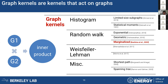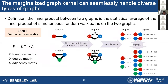We can also apply kernels to graphs. The kernel should take in two graphs, and the output defines an inner product between the two graphs in some abstract feature space. There are many different existing graph kernels that have been proposed, and the one we are particularly interested in is the marginalized graph kernel. It defines the similarity between graphs as a statistical average of the similarity of random walk paths that we can generate on the graph.